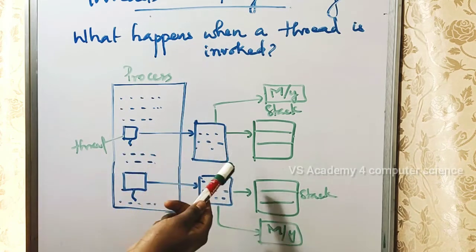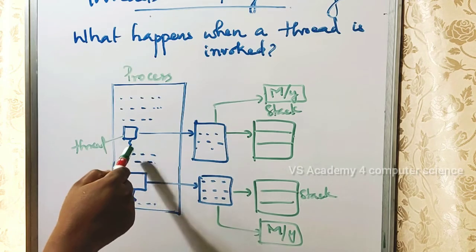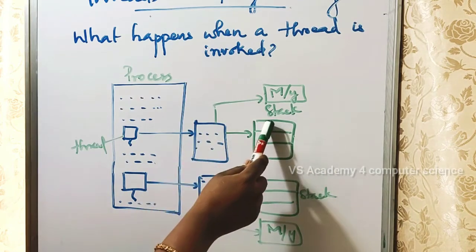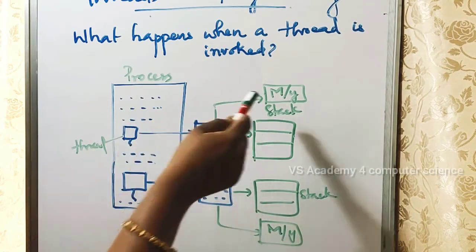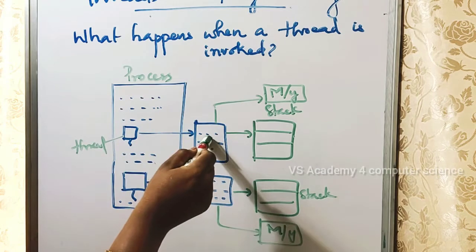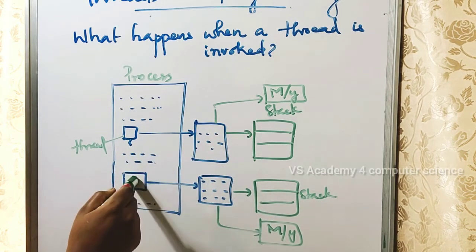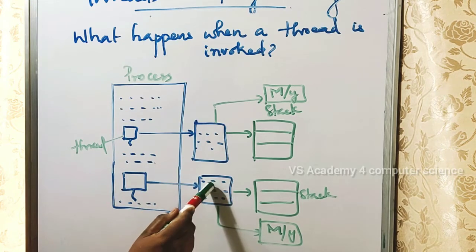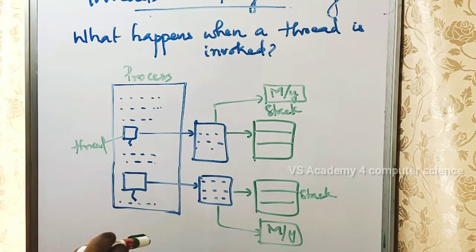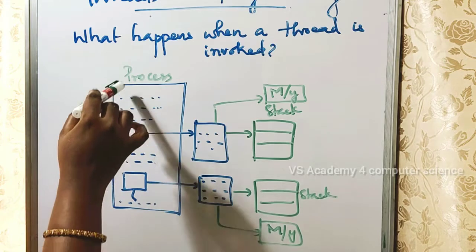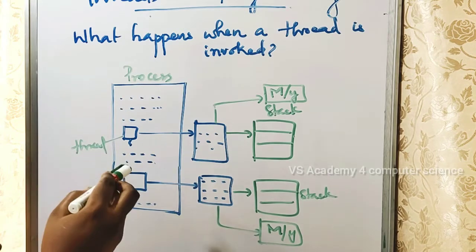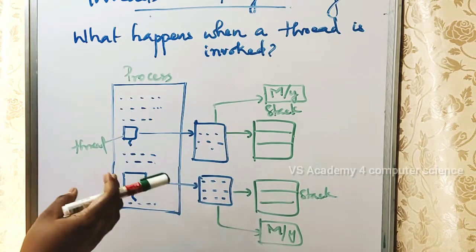When you execute a thread, it will execute the following statements after that particular thread call. The thread has its own stack and memory space, though some memory is shared. Another thread can execute in the background simultaneously. Always think that a process can have multiple threads — that is multi-threading and multi-processing.